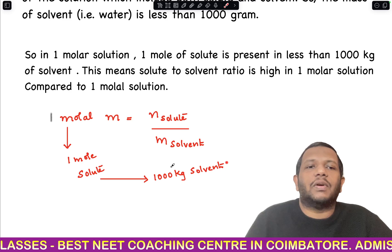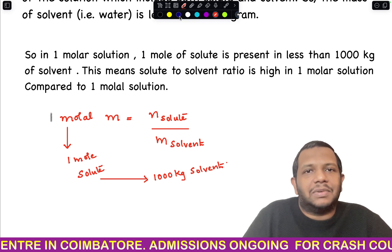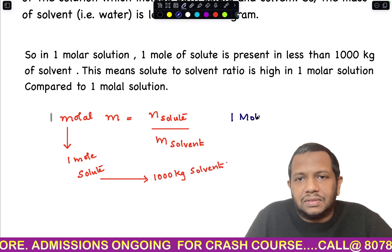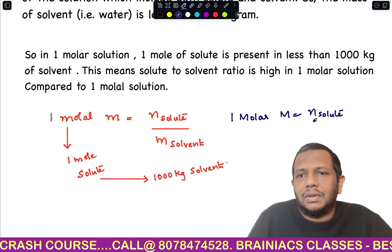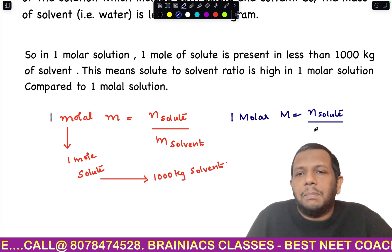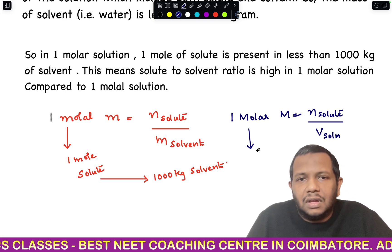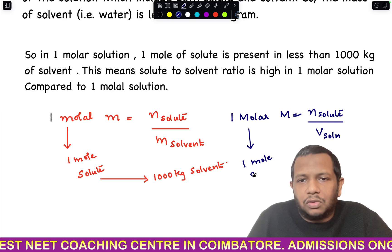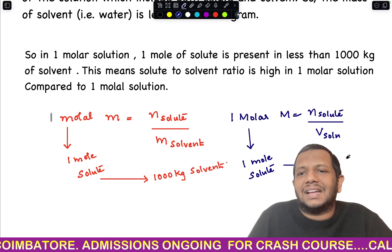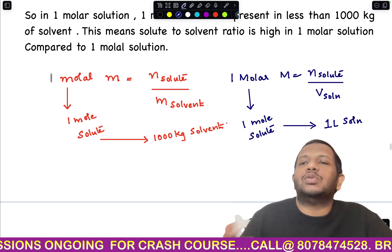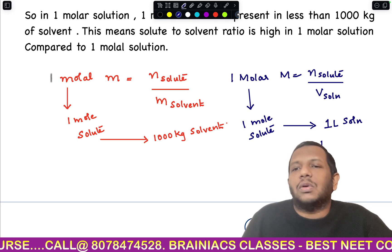For a 1 molar solution: M = moles of solute ÷ volume of solution. One molar means 1 mole of solute in 1 liter of solution. Since density = 1 g/mL, 1 liter of solution has a mass of 1000 grams — but that is solution mass, meaning some of those 1000 grams is solute, so the solvent mass is less than 1000 grams.